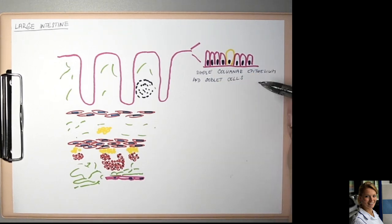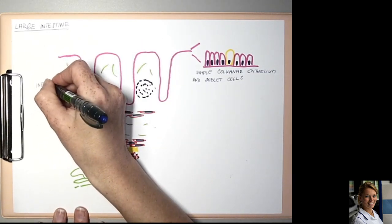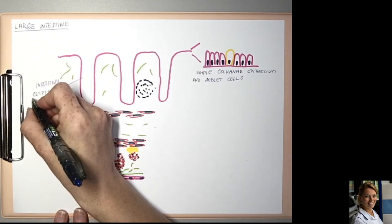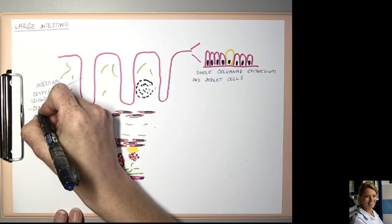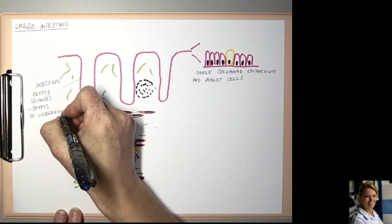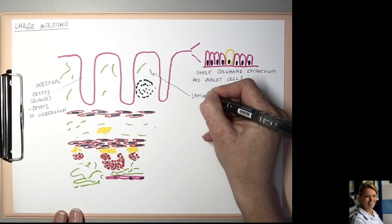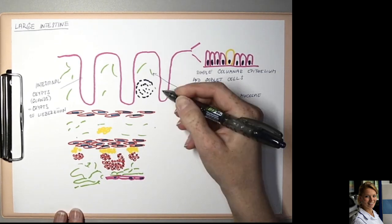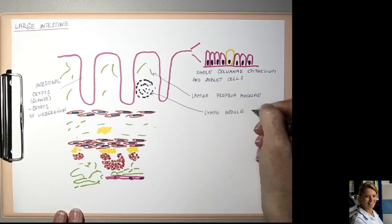So this layer is the lamina epithelialis mucosae. Intestinal crypts or glands, the crypts of Lieberkühn. Beneath the epithelium is lamina propria which contains lymph nodules or follicles.